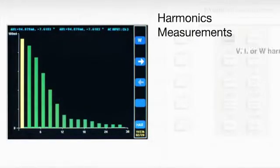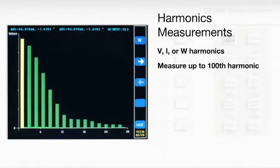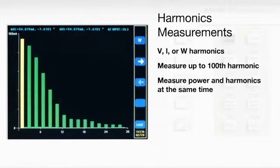Every PA-4000 instrument comes with the ability to measure up to the hundredth harmonic, so you can find out where you stand relative to regulatory limits on harmonic distortion.